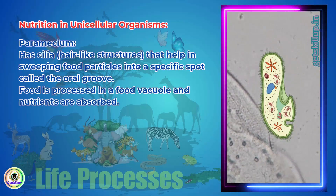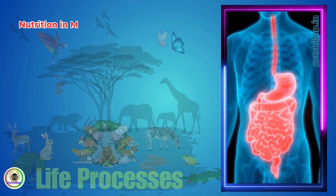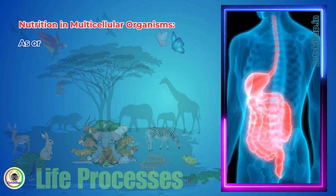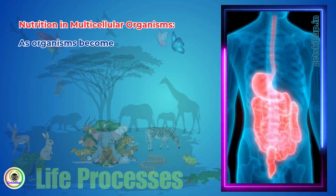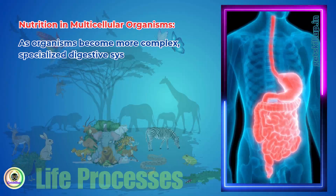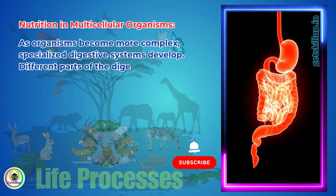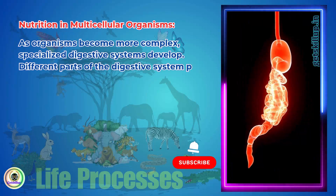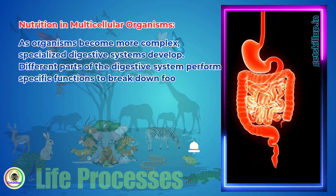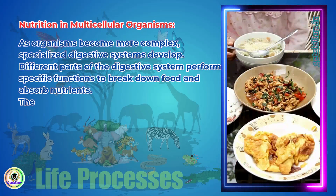Nutrients are absorbed from the food vacuole. As organisms become more complex, specialized digestive systems develop. Different parts of the digestive system perform specific functions to break down food and absorb nutrients.